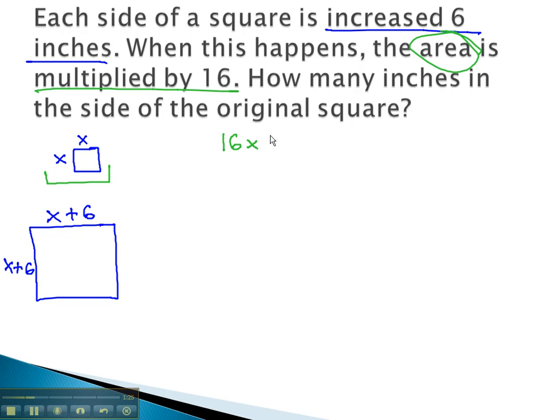Length times width will give us x squared, and this will equal the other area. Length times width will give us x plus 6 squared. To give us something easier to work with, let's multiply out that right side. We can square the first term. The product's there twice, 6x and 6x is 12x, and finally square the last term to get 36.